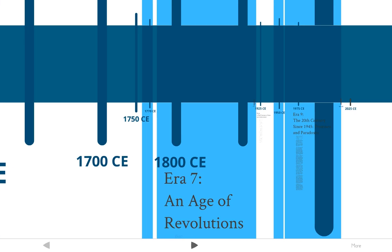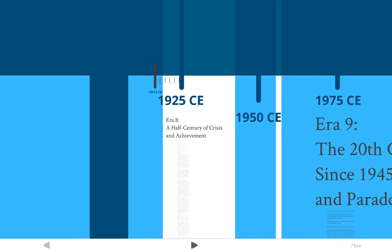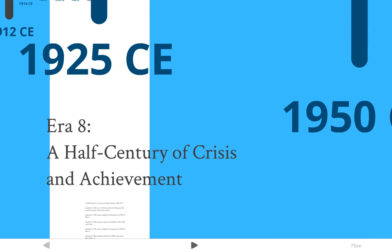In Era 7, we'll be looking at an age of revolutions that starts from the US Revolution in the late 1700s and goes all the way up to the early 1900s, looking at different revolutions going on in Europe as well. In Era 8, we'll be looking at a half century of crisis, from 1900 to 1950, covering World War I and World War II.